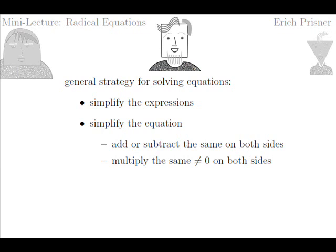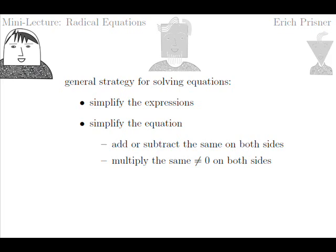Also remember that when multiplying, you have to be careful. If you multiply both sides by zero, you get an equation having more solutions than the equation before. We may not even notice that we multiply by zero. Imagine we multiply an equation by x minus one at some point, and later we find that x equals one is a solution of the resulting equation. That means we had multiplied the equation by x minus one, which is equal to zero. Therefore, one may not be a solution of the original equation.